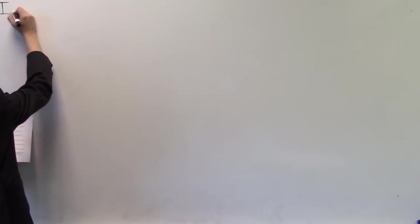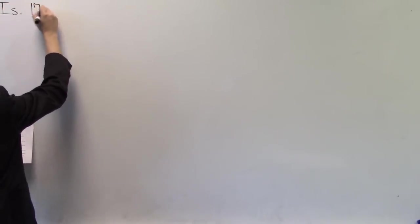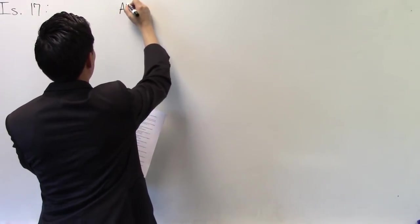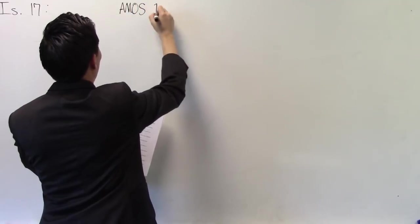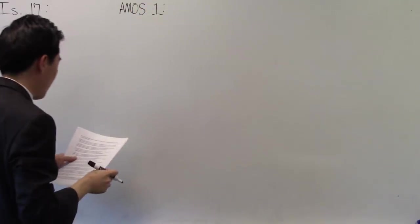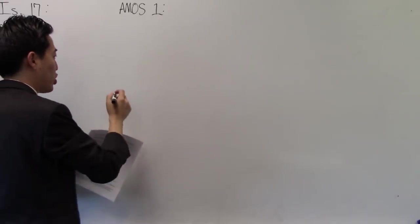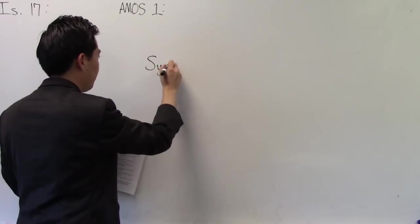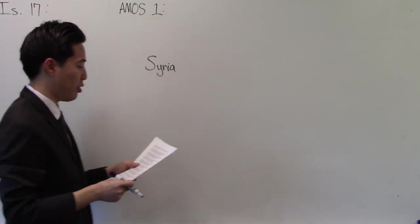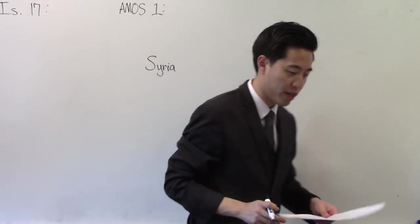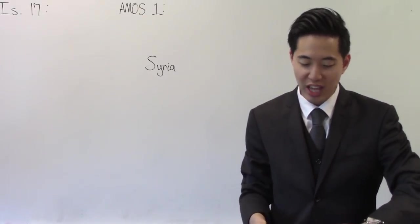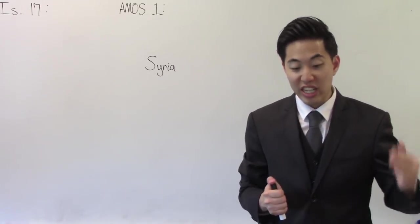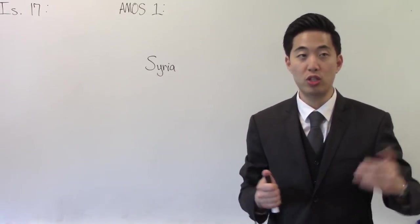Alright, Isaiah chapter 17, and then we're also going to look at Amos chapter 1. Now in these two passages, it talks about two locations where the Lord talks about. But the big one which we're all looking at is Syria. So as we all pay attention to Syria, we see so many things going on. It's crazy. I'm going to read you the headlines of these articles. These are all from the Israeli news source, the Times of Israel.